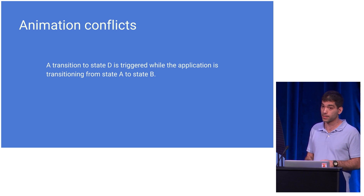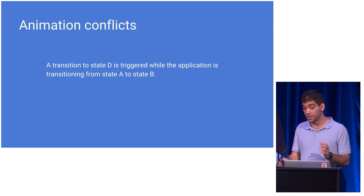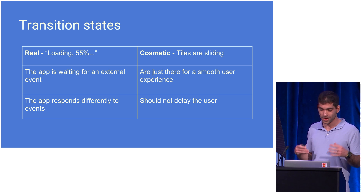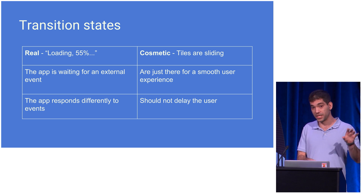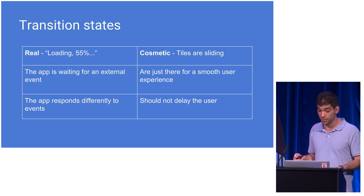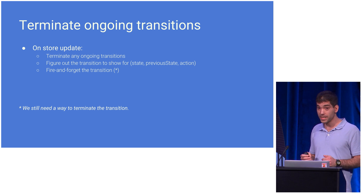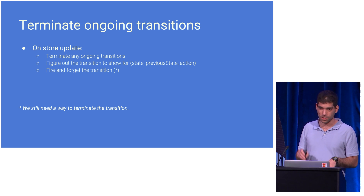The next problem we have to deal with is animation conflicts. An animation conflict is when a transition to a new state is triggered while the application is transitioning between two other states. It's useful to differentiate between two kinds of transitions: real ones, where the application is actually waiting for something to happen, versus cosmetic transitions — like the animation of tiles sliding — which are just there to make the user experience smoother. Our UI code responds to a store update by terminating any ongoing transition, figuring out which transition to show based on the triplet, and firing that transition.